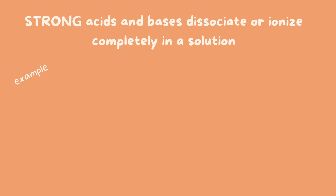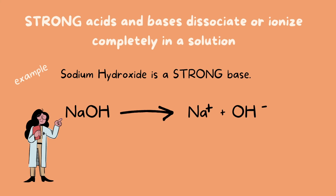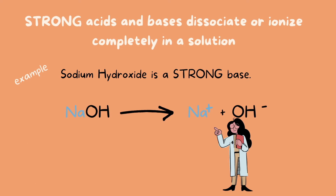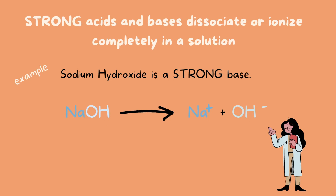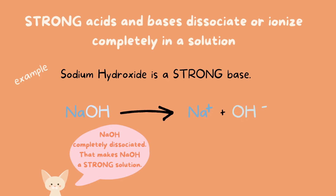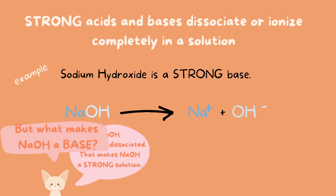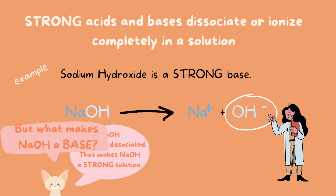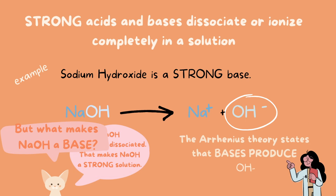Sodium hydroxide is a strong base. In this chemical equation, sodium hydroxide dissociates into sodium ions and hydroxide ions. Because sodium hydroxide completely dissociated — it completely broke apart — that is what makes it a strong solution. NaOH is a base because it created hydroxide ions in solution, and the Arrhenius theory states that bases produce hydroxide ions in a solution. So sodium hydroxide is a strong base.